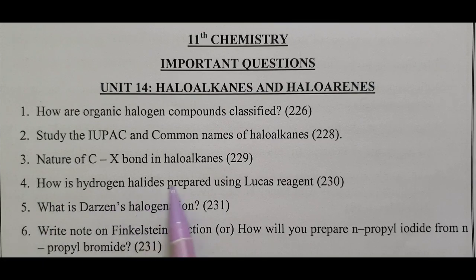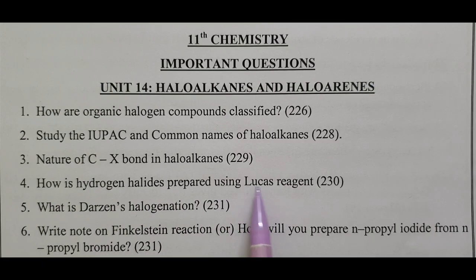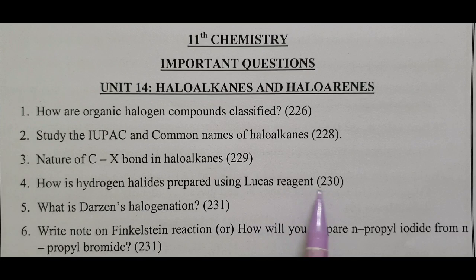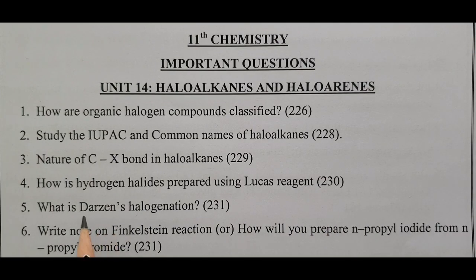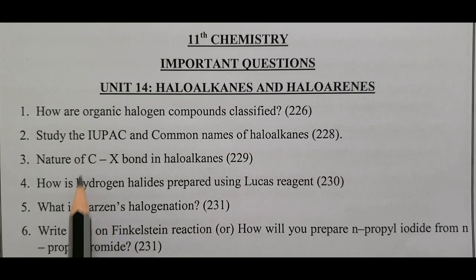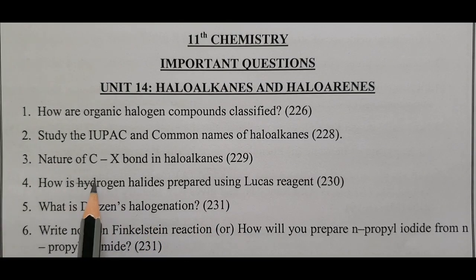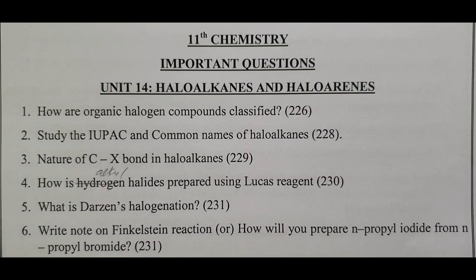How is hydrogen halide prepared using a glucose reagent? What is halogenation? The products include hydrogen halide, alkyl halide, and alkyl halide.